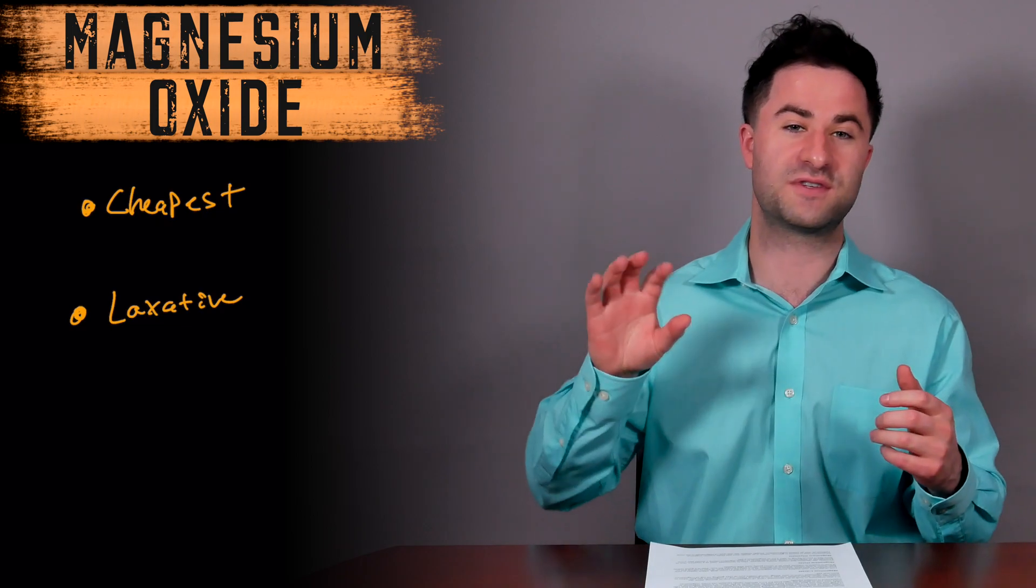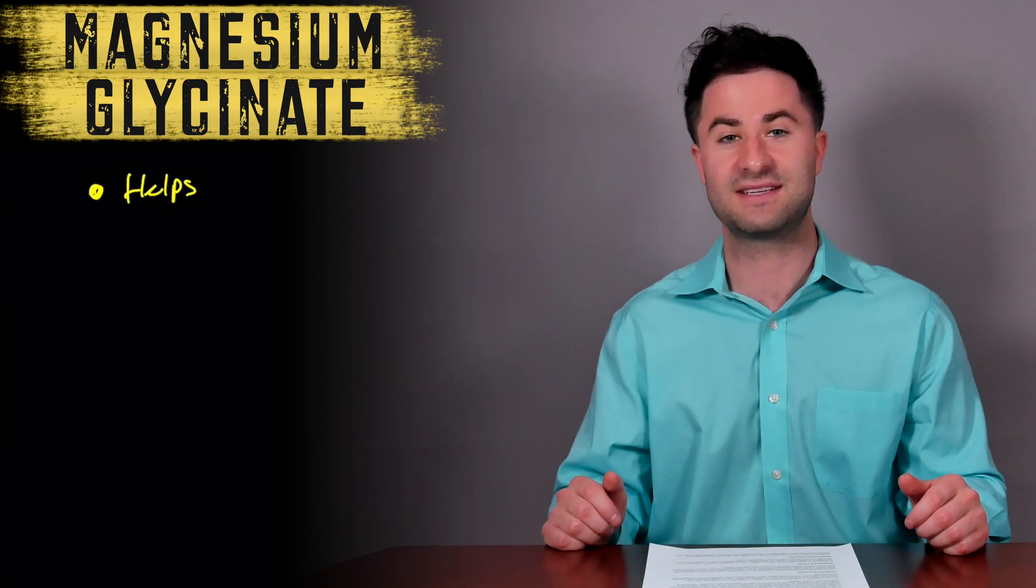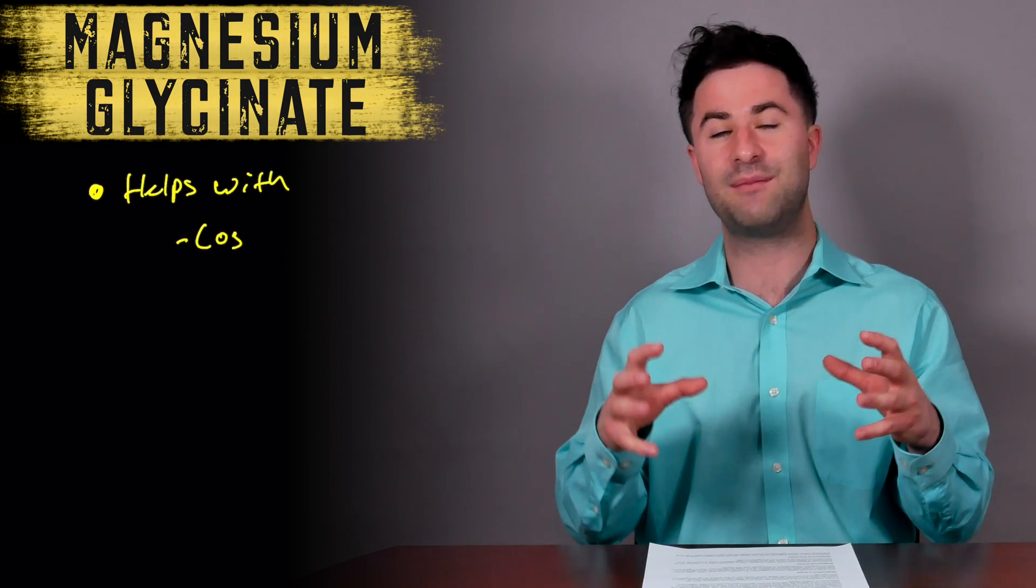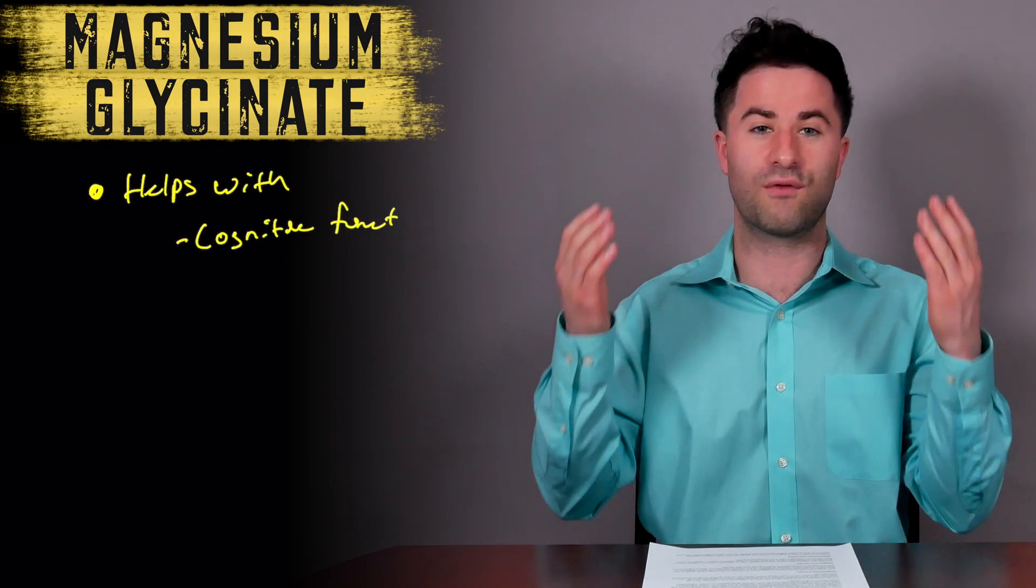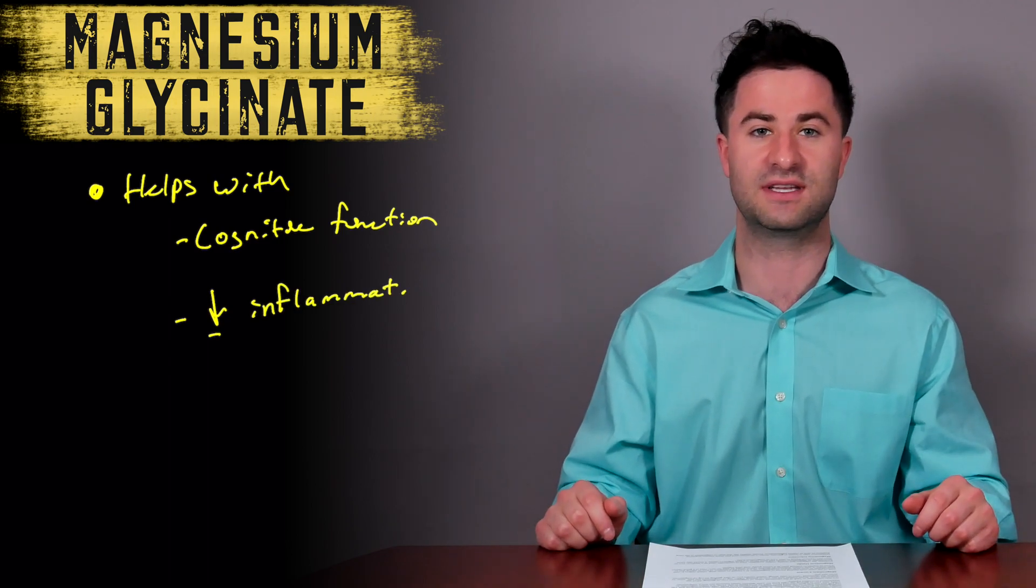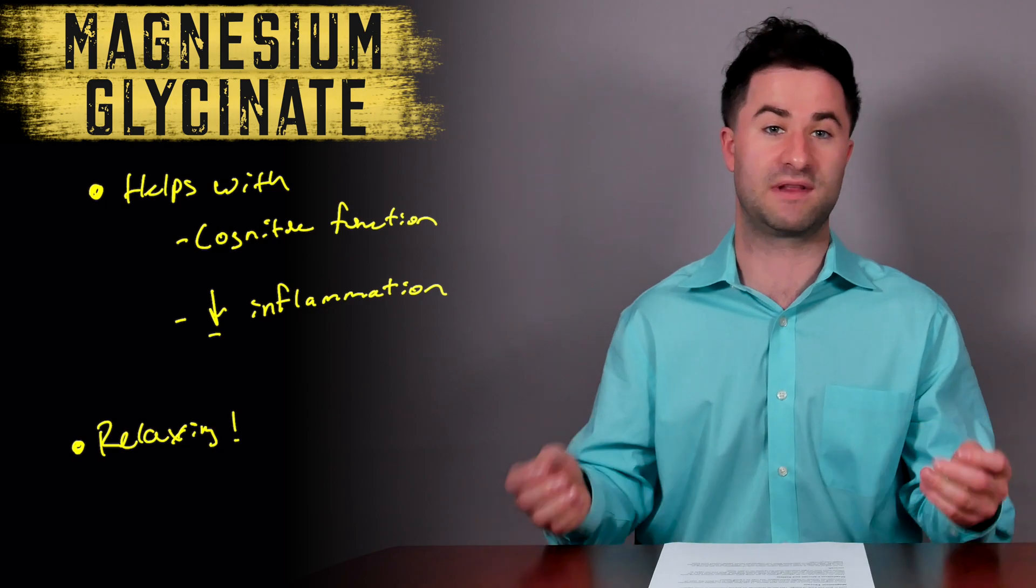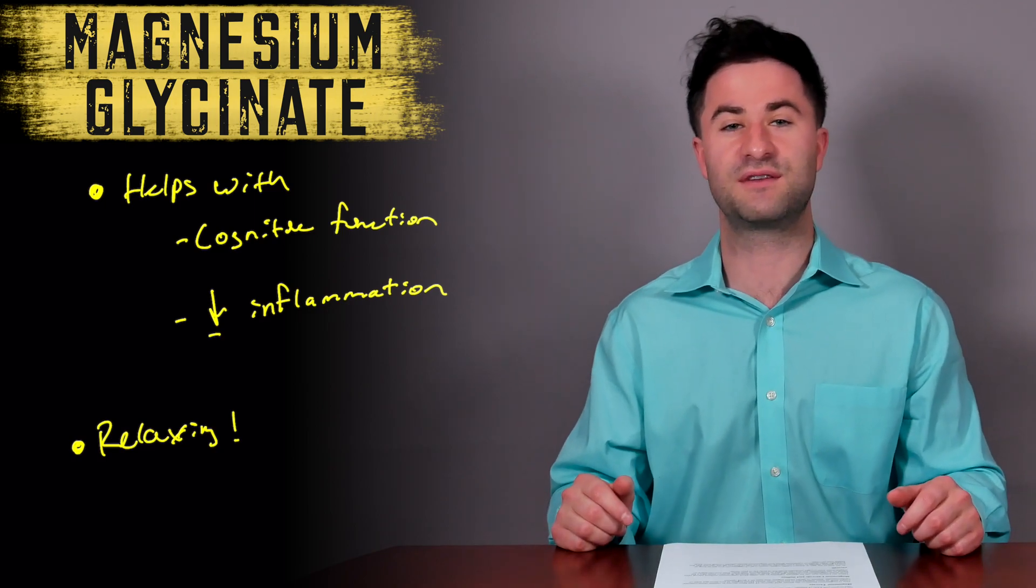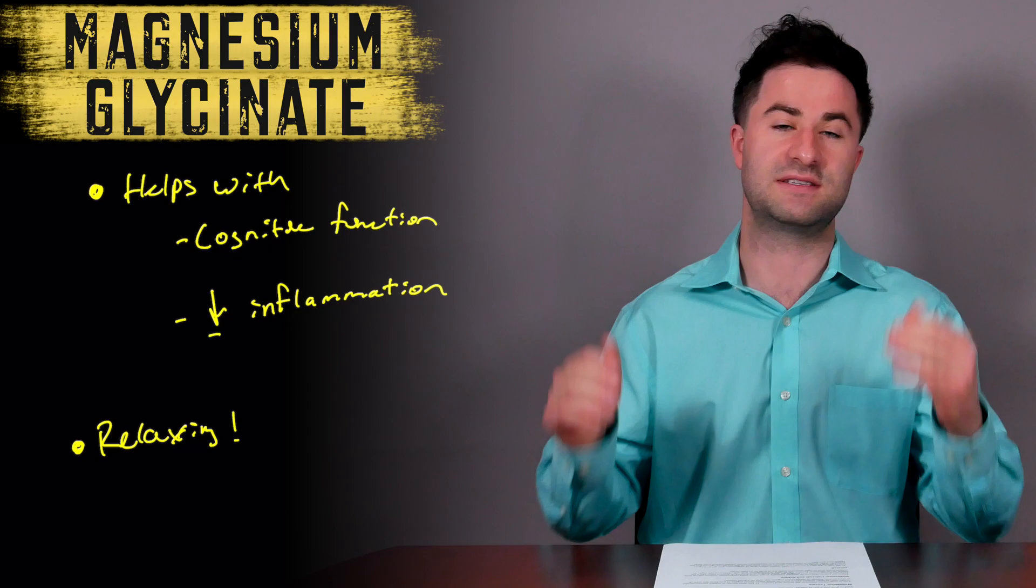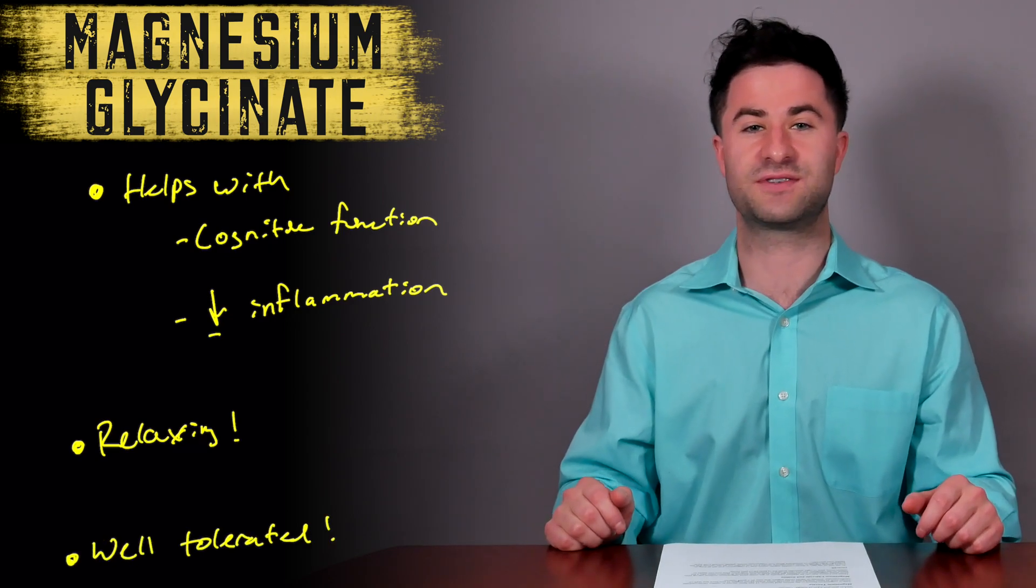The next one on our list is magnesium glycinate. Magnesium here is bound to glycine, which is an amino acid, and together this combination really helps with overall cognitive function as well as decreasing inflammation. People usually say that taking this type of magnesium promotes relaxation. It is one of the most effective formulations at boosting magnesium levels very quickly and is generally really well tolerated without causing a lot of stomach issues.